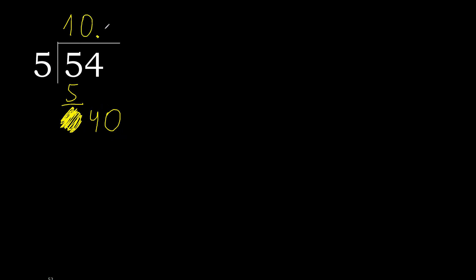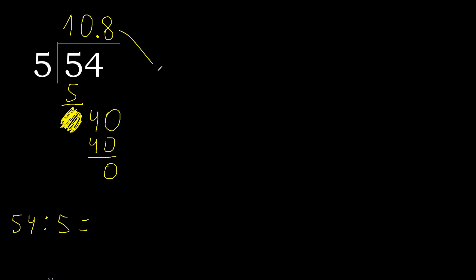40. 5 multiplied by 8 is 40. 40 minus 40 is 0. Therefore, finish it. 54 divided by 5 is 10.8.